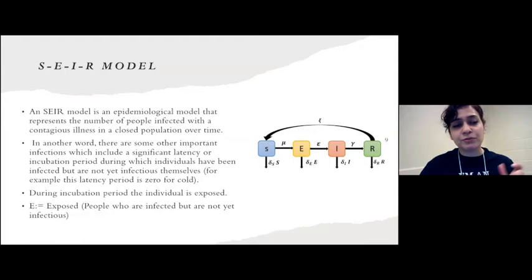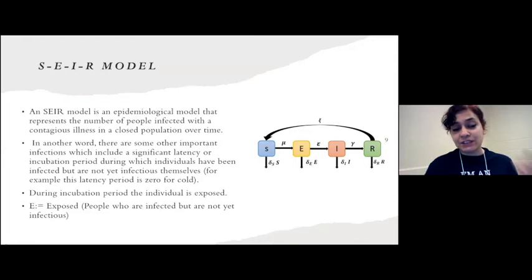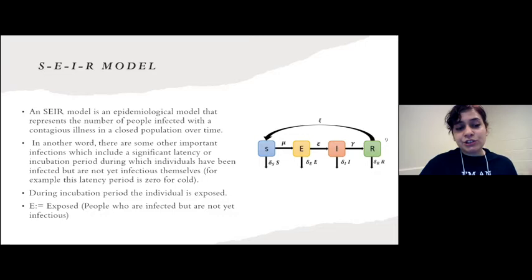There is also the SEIR model, which applies to some types of disease that have an incubation period. This model has an extra compartment E — exposed — representing people who are infected but not yet infectious. This is for infectious diseases with a latency or incubation period, where individuals have been infected but are not yet infectious.